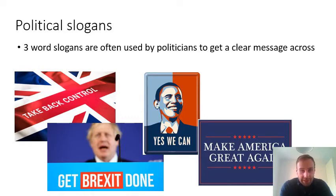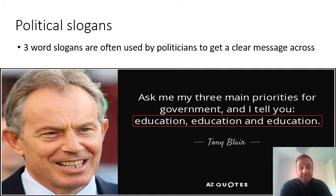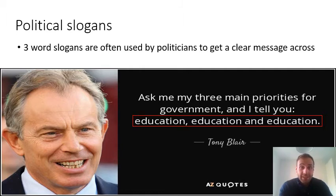When Tony Blair came to power in 1997, his political slogan was three words long: 'Education, Education, Education.' That really summarises just how important education was for the Labour Party. They felt a lot of changes had to come because the UK was falling down international league tables rather than rising up them.